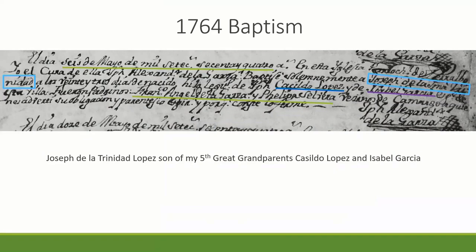This is a 1764 baptism of Josef de la Trinidad López, son of my fifth great-grandparents, Cacildo López and Isabel Garcia. It's always good to take the time to transcribe the documents because it will make you slow down and analyze the record. It has the place where he got baptized, his name, the name of the father, the mother. And towards the bottom, it says Francisco Ángel de la Garza and Felipe Selvera — it turns out they're also my ancestors. His godparents are also my ancestors, so these two couples were not related but were at least friends.